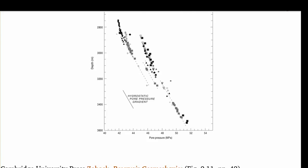This is some pore pressure versus depth data, and for the most part it follows hydrostatic. The dashed lines are hydrostatic. But at the tops — at the highest points — you have these little kicks where the data doesn't quite follow hydrostatic. This is due to hydrocarbons being more buoyant than the water, sitting on top of the formation.